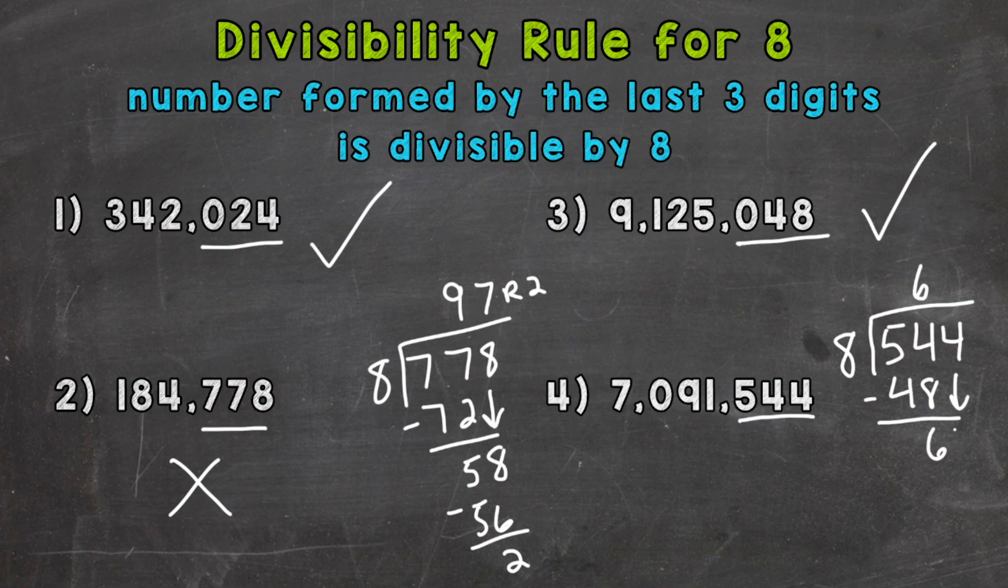Bring down our 4 here. And 64 and 8 are compatible. So 64 divided by 8 gives us an 8. 8 times 8, 64.